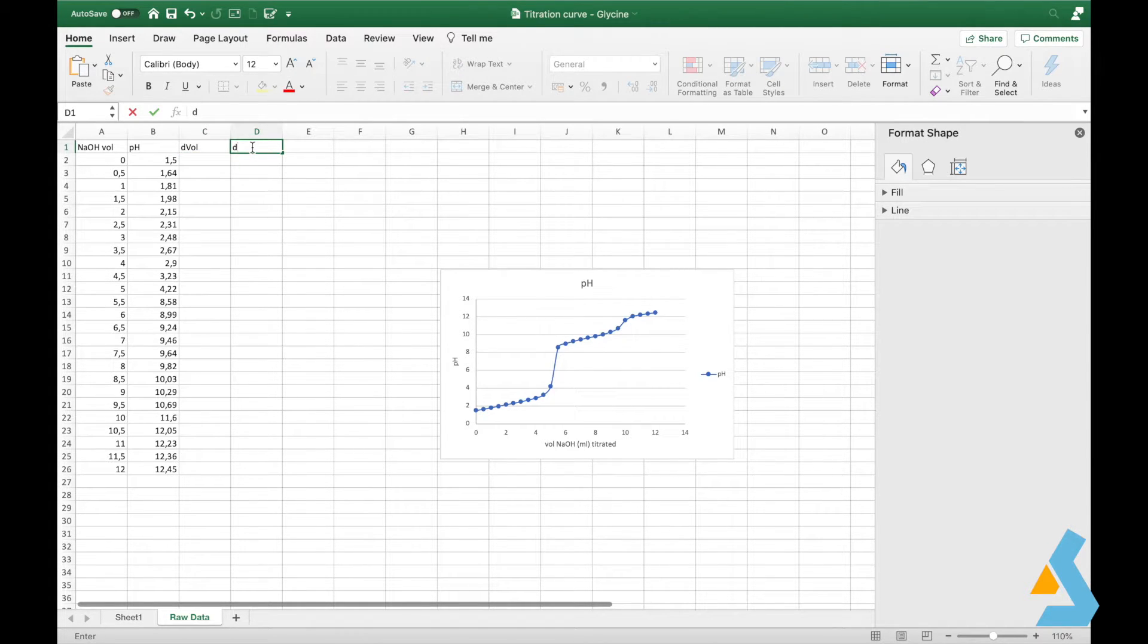For this, we need to define the derivative for this curve. Thereby, we add three new columns. The first one shows the change in volume titrated. For this, we will do a basic subtraction. As the additions were always 0.5 ml, we will see the same value for all subtractions.